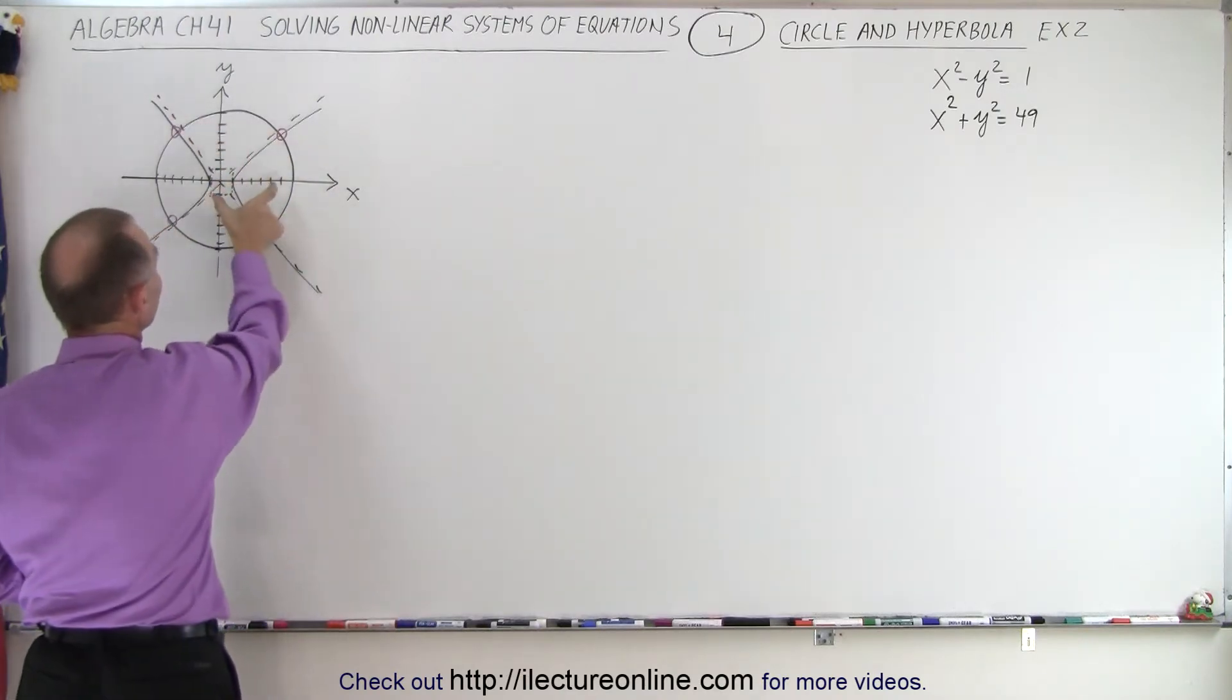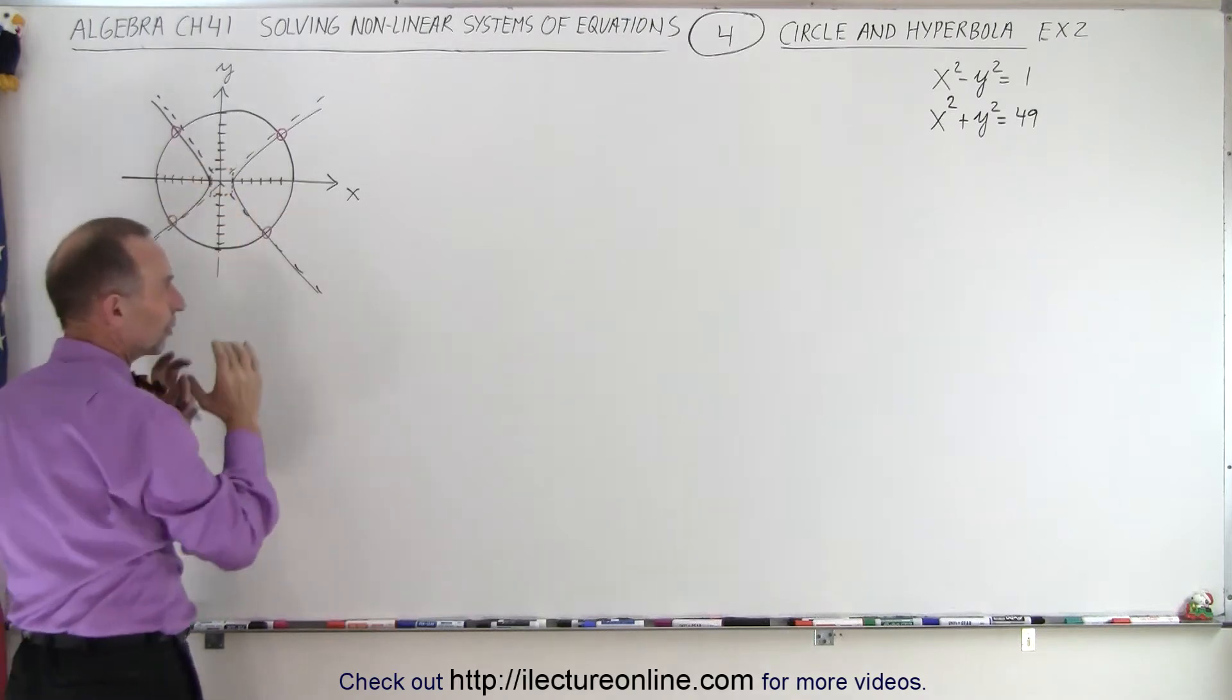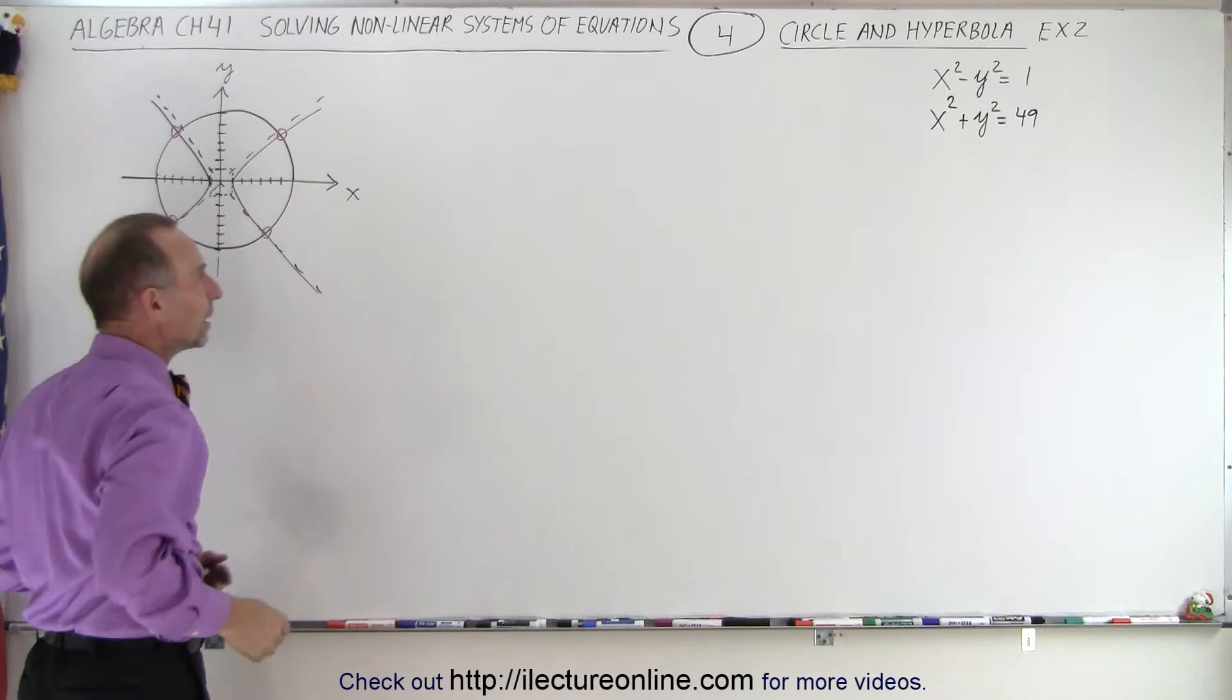Notice that the circle has radius 7 and the hyperbola has a box one by one. So one in the x direction and y direction, one to the right, to the left, one up and down. It's a little box. You put the diagonals in there and then you're able to just draw the hyperbola.